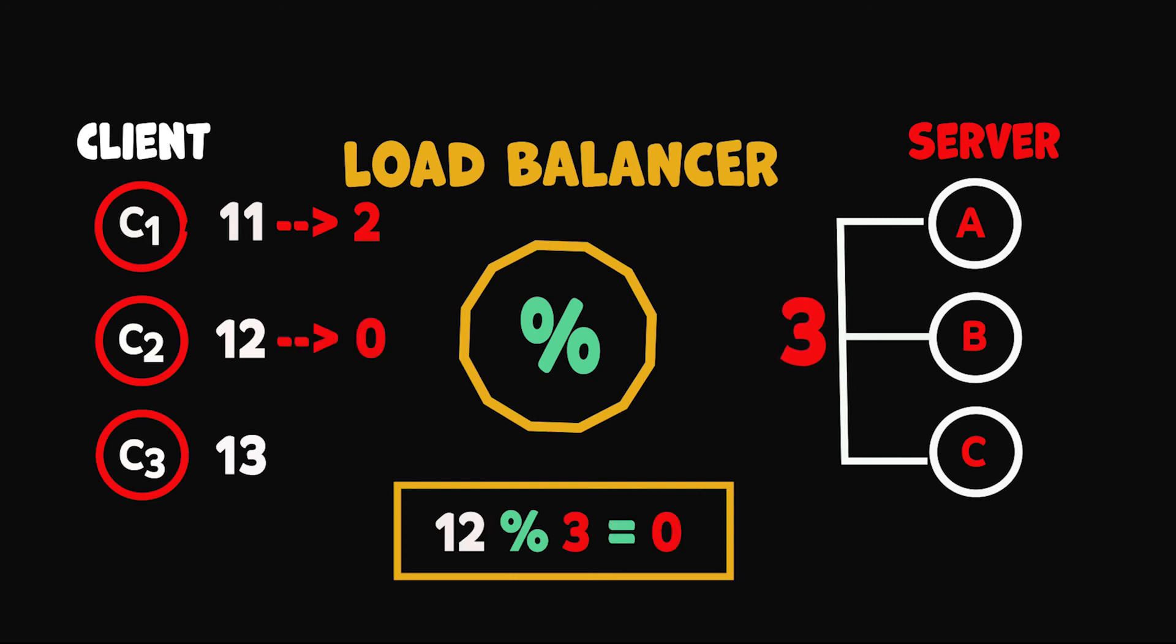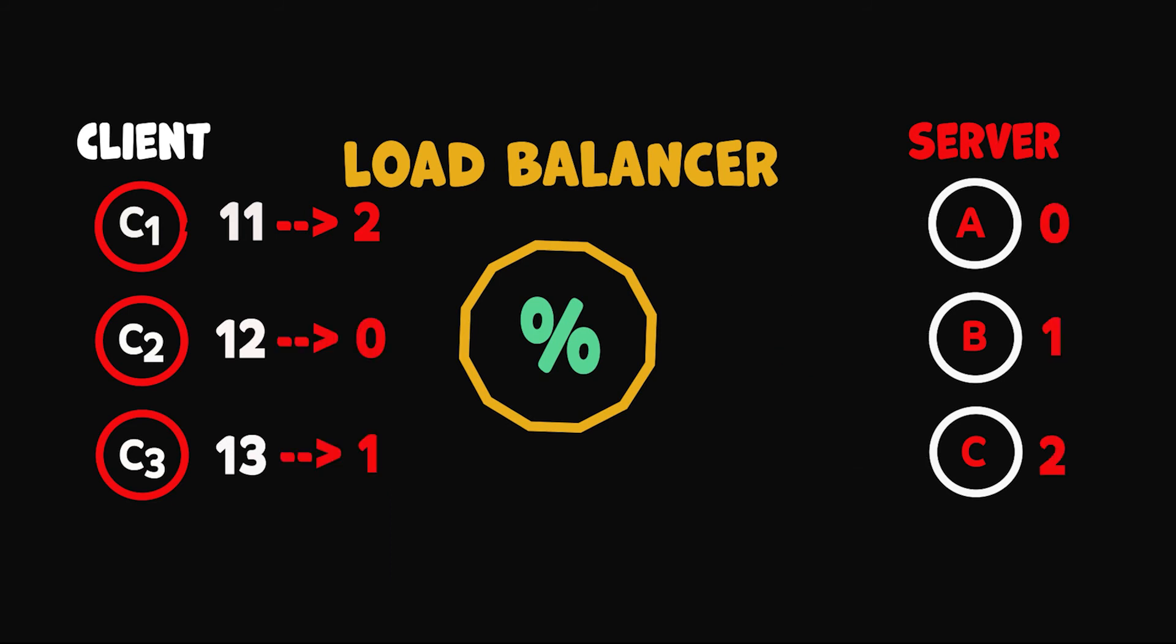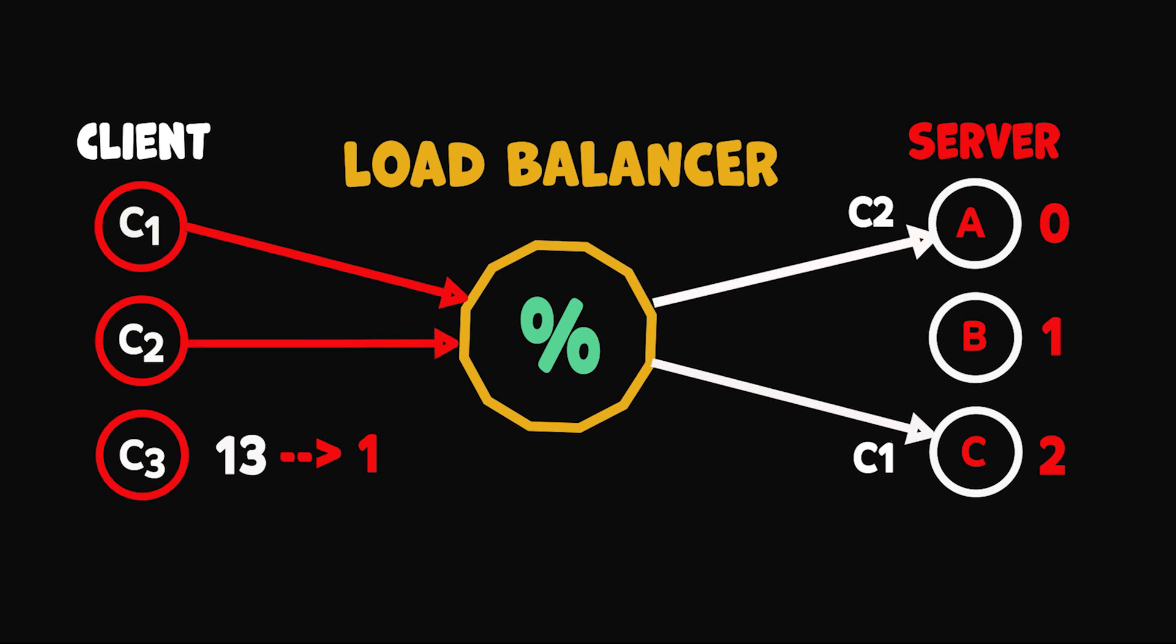For 12, it is 0. For 13, it's 1. So all requests from C1 will now go to this server. Requests from C2 will go to this server. And requests from C3 will go to this server. Maximizing our cache hits and minimizing unnecessary recomputation.